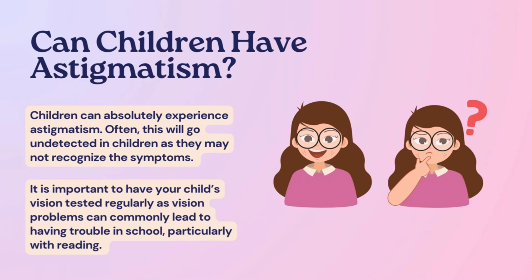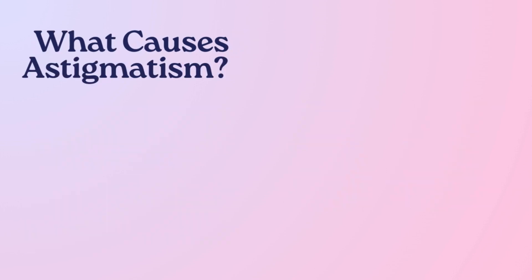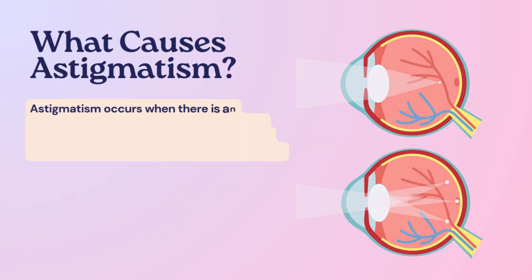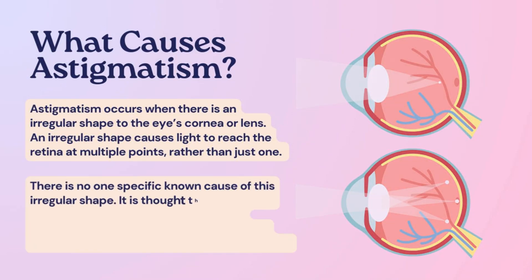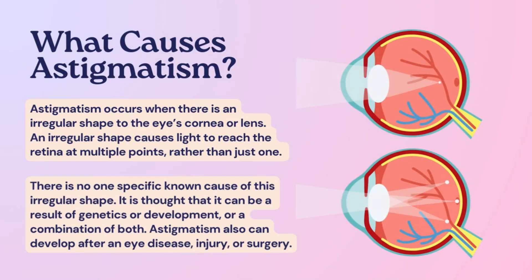Vision problems can commonly lead to having trouble in school, particularly with reading. What causes astigmatism? Astigmatism occurs when there is an irregular shape to the eye's cornea or lens. An irregular shape causes light to reach the retina at multiple points rather than just one.